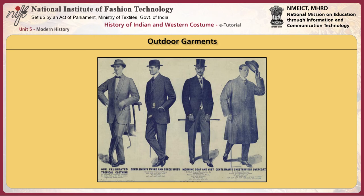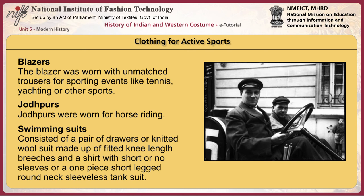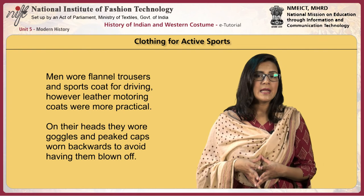Overcoats were full to accommodate the wide-cut suit of the first decade and became more fitted in the second. Top coats ended at the hip. Basic styles included chesterfields, ulsters, inverness capes, mackintosh, and trench coats. The blazer was worn with unmatched trousers for sporting events like tennis, yachting, or other sports. Jodhpurs were worn for horse riding. Swimming suits consisted of a pair of drawers or a knitted wool suit of fitted knee-length breeches with a shirt, or a one-piece short-legged round-necked sleeveless tank suit. Men wore flannel trousers and a sports coat for driving.